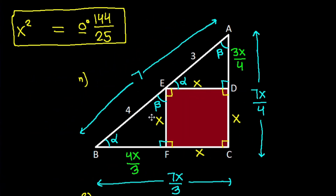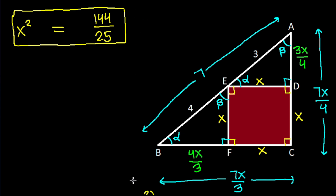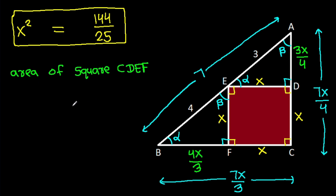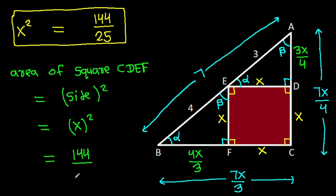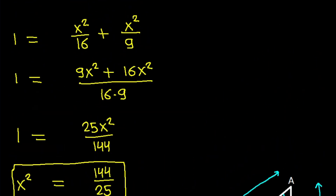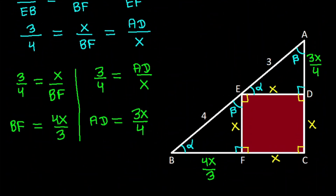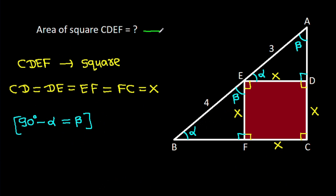So X² equals 144 over 25. Now, the area of square CDEF equals side² equals X², which is 144 over 25. So the area is 144 over 25. Thank you.